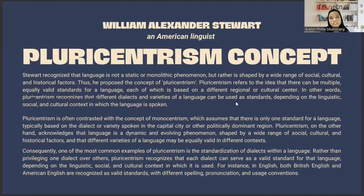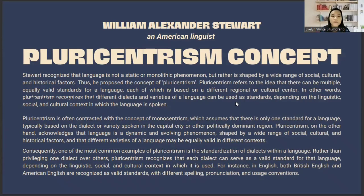Stewart recognized that language is not a static or monolithic phenomenon, but rather is shaped by a wide range of social, cultural, and historical factors. Thus, he proposed the concept of pluricentrism, which refers to the idea that there can be multiple equally valid standards for a language, each based on a different region or cultural center. Rather than privileging one dialect over others, pluricentrism recognizes that each dialect can serve as a valid standard depending on the linguistic, social, and cultural context. For instance, in English, both British English and American English are recognized as valid standards, with different spelling, pronunciation, and usage conventions.